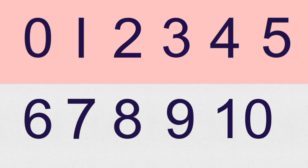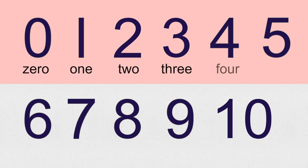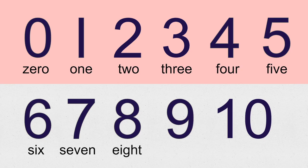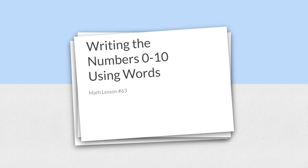Today we have reviewed how to write the words zero, one, two, three, four, five, six, seven, eight, nine, and ten. And I know with some practice you are going to do a wonderful job writing these number words. I'd love for you to take some time to practice and review how to spell these words today. Thank you so much for reviewing with me, and I hope that you have a wonderful day, class. Bye-bye.